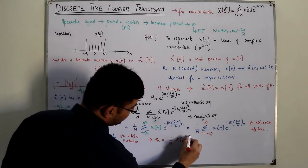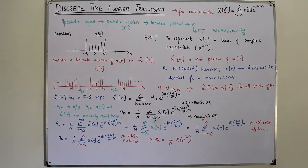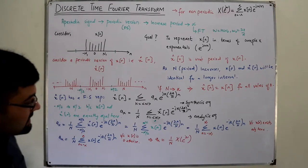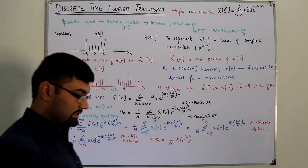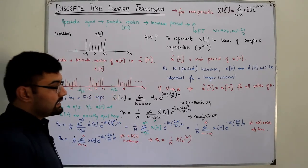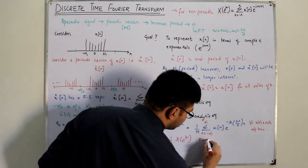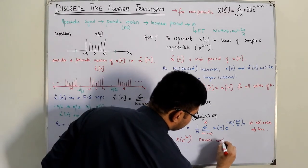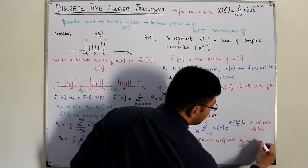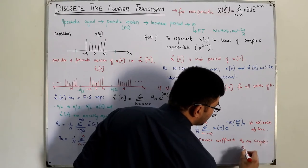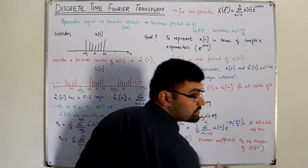So Aₖ = (1/N) · X(e^{jω}). This means that the Fourier series coefficients Aₖ are samples of X(e^{jω}), evaluated at ω = k·ω₀.